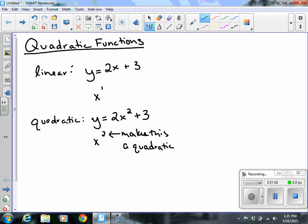Anything that is to the x squared is going to be a quadratic function. Now there are some conditions. The number in front of the x squared obviously cannot be zero because zero times anything gives you nothing. So then you wouldn't have that x squared.